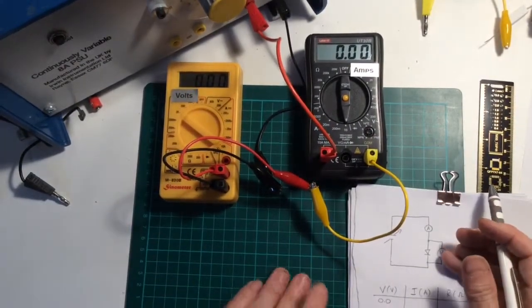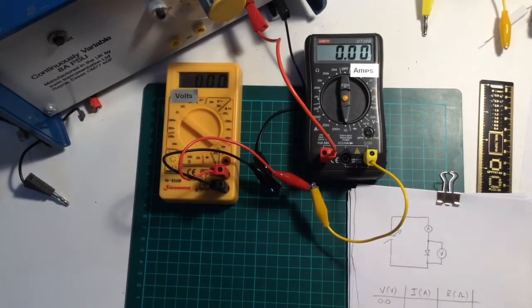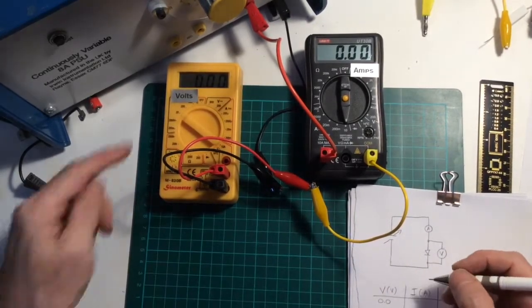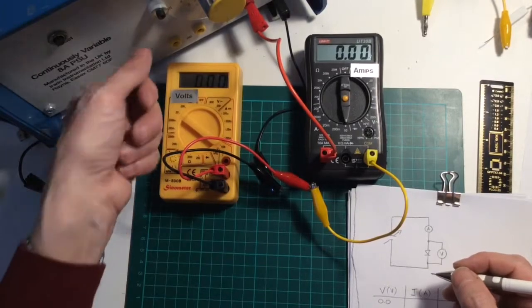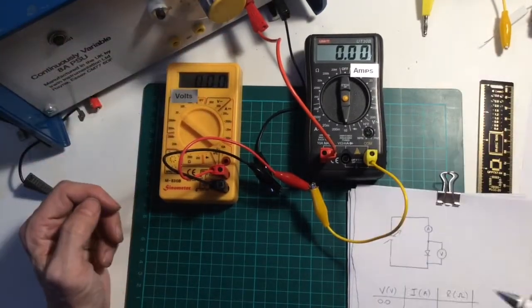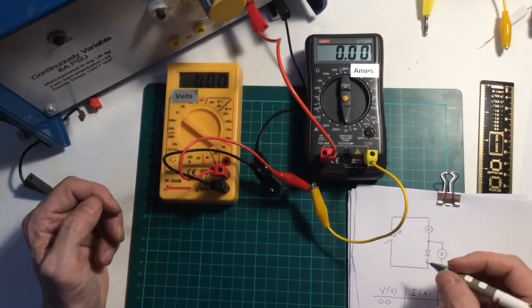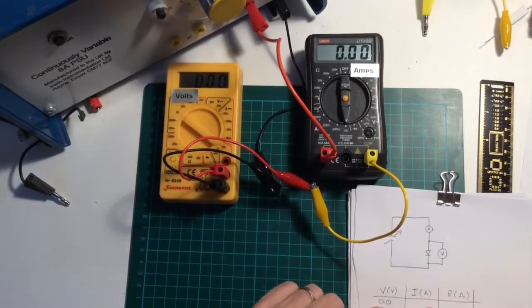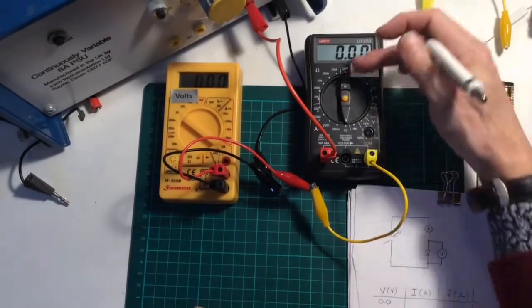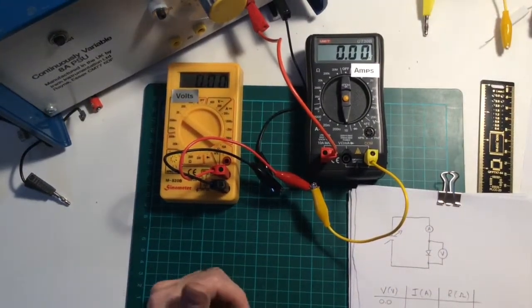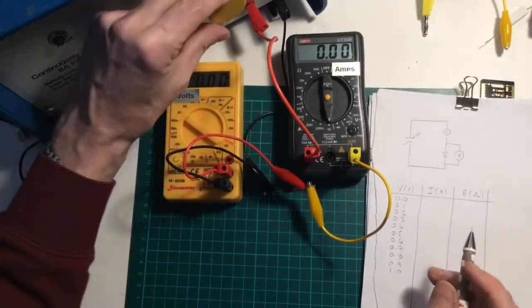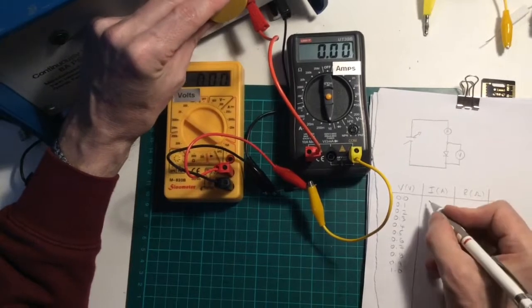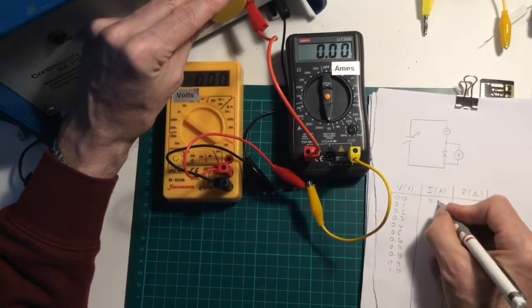Now I can't just go up in steps of one volt in this because I've discovered that if you try and turn this up what happens is the current gets too big. I have to keep the current down to a certain value, so I'm going to try and go up in steps of 0.1 volt. So let's take the first reading: 0.0 amps at 0.00 volts.